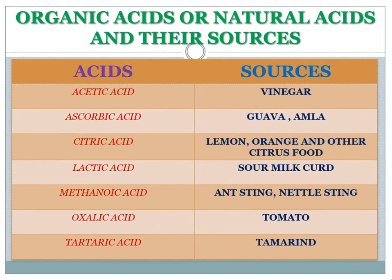The sources of organic or natural acids: acetic acid is found in vinegar; ascorbic acid is found in gooseberries (amla) and similar fruits; citric acid is found in lemon, orange, and other citrus foods; lactic acid is in sour milk and curd; formic acid from ant stings; oxalic acid in tomato; and tartaric acid in tamarind. Take a snapshot as these sources are important for exams.